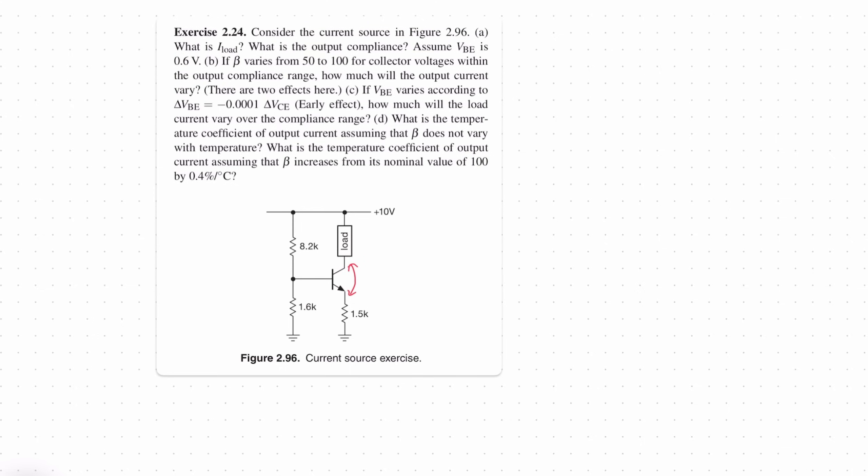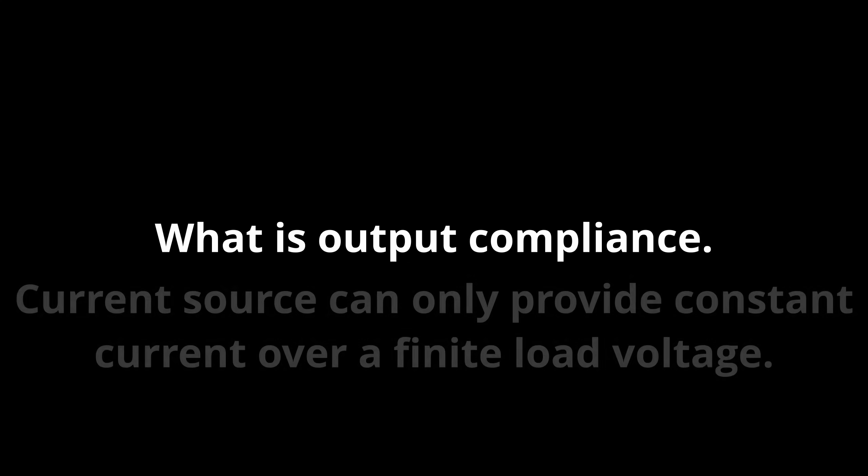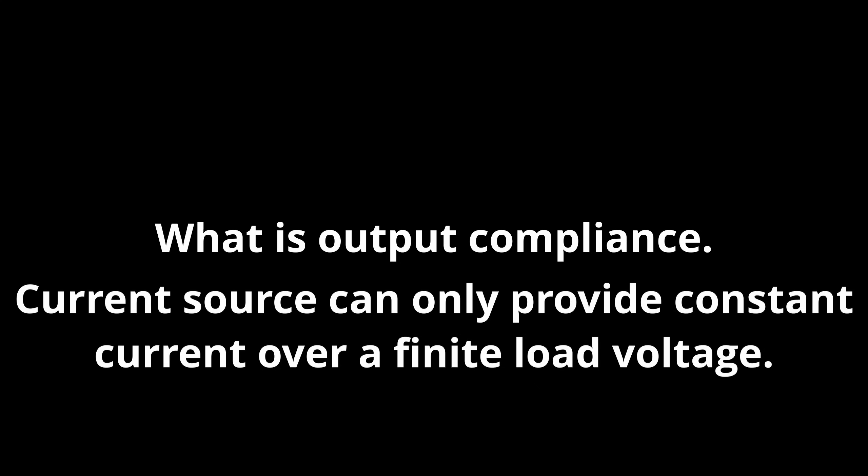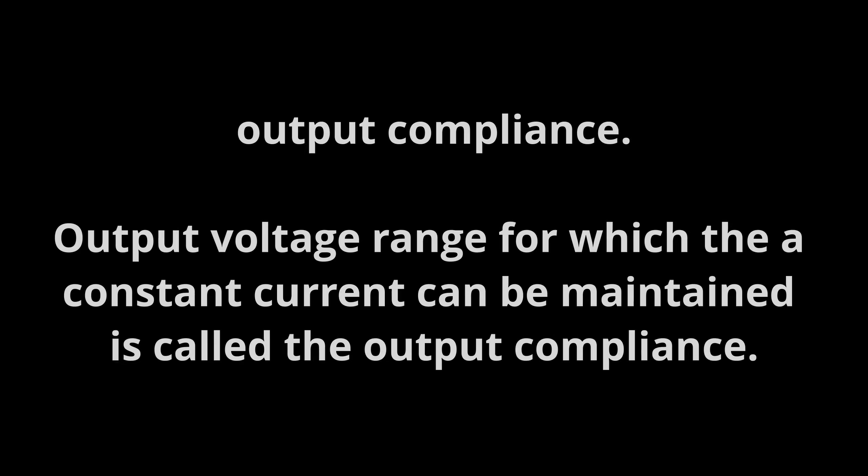For the second part, we need to look at the output compliance, basically this part over here. So first of all, I should really explain what output compliance is. We've been through this in one of the exercises before. But to summarize, a current source can provide constant current to the load only over some finite load voltage. When you go beyond that load voltage, obviously, you're not able to maintain that constant current that you need to for the load. If this limitation wasn't there, obviously, you'd be providing infinite power, which is not possible. So essentially, the output voltage range for which the current source behaves well is called the output compliance.